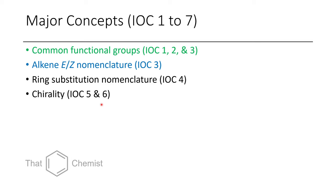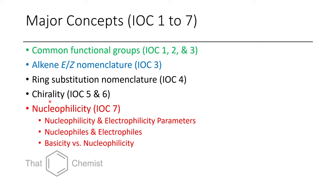In lectures 5 and 6, we discuss chirality. In lecture 7, we talk about nucleophilicity, including nucleophilicity and electrophilicity parameters, nucleophiles and electrophiles, as well as basicity and nucleophilicity. These are important concepts. I've highlighted the most important ones in color, but all of them have an important role in organic chemistry.